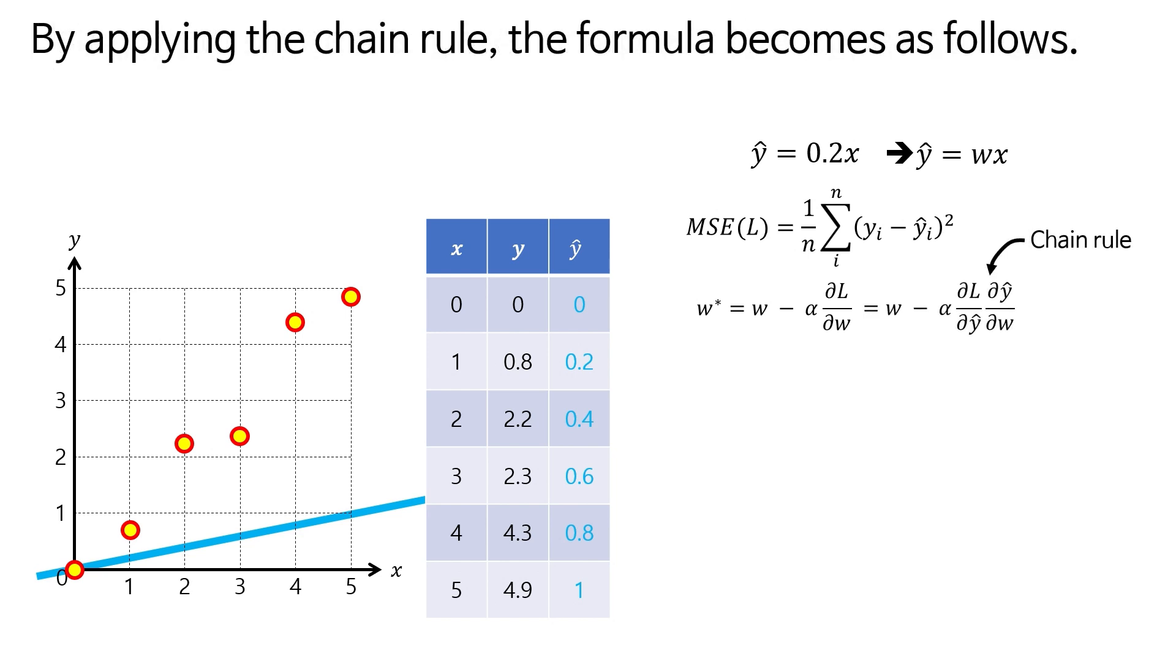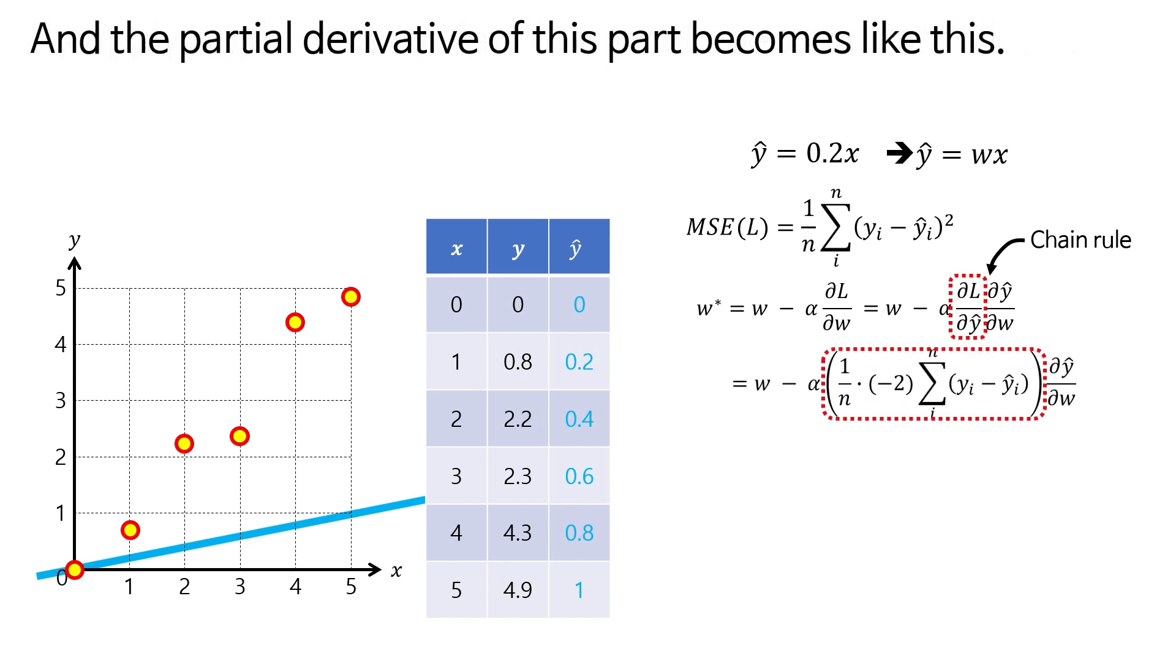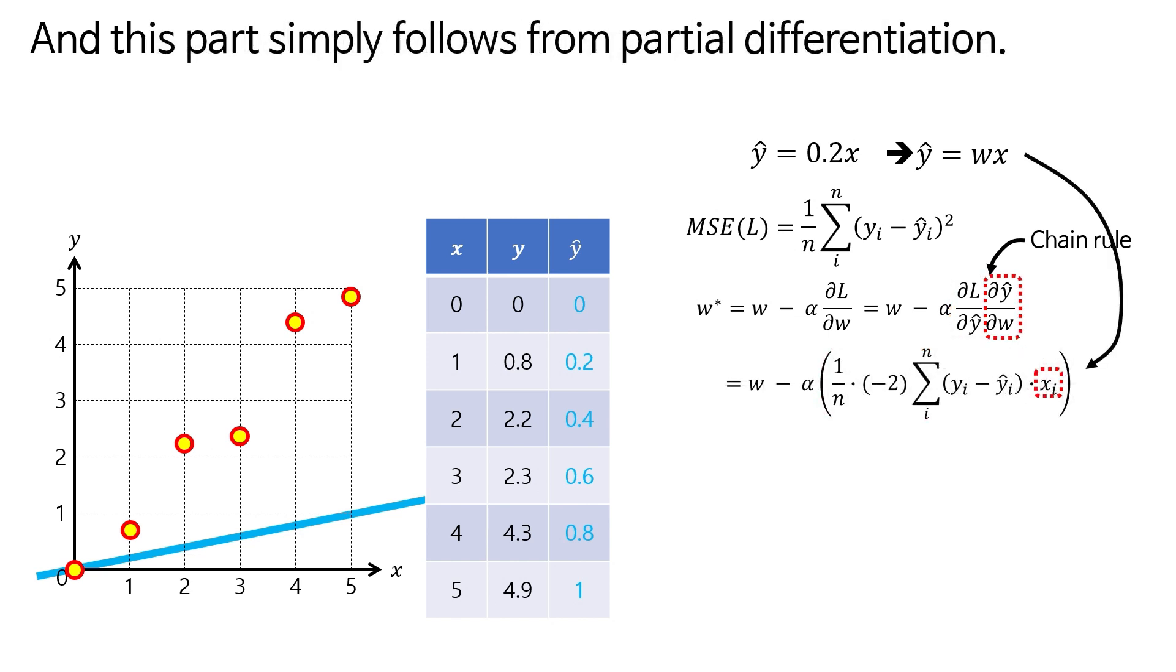By applying the chain rule, the formula becomes as follows. And the partial derivative of this part becomes like this. And this part simply follows from partial differentiation.